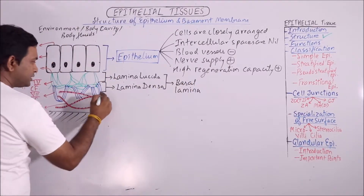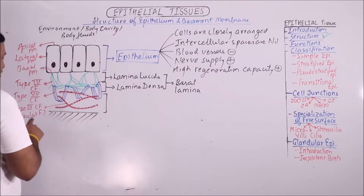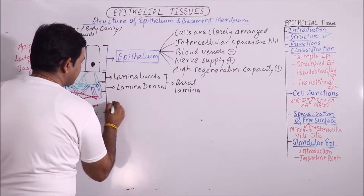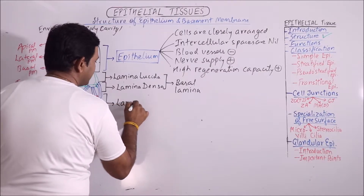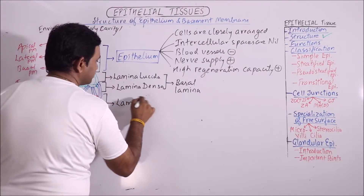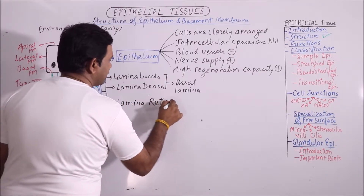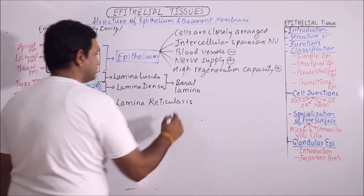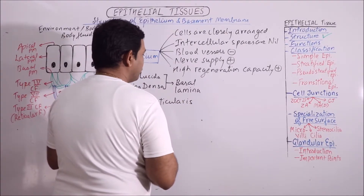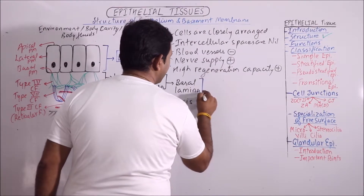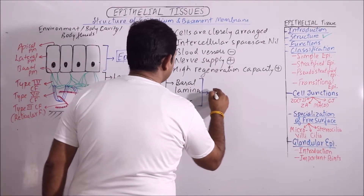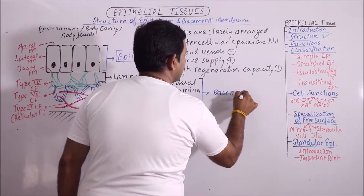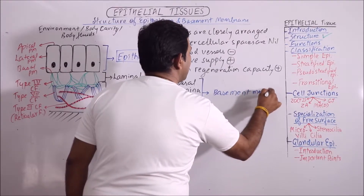Below the basal lamina, type 3 collagen fibers or reticular fibers are present. That is why this is known as the lamina reticularis. And finally, both the basal lamina and lamina reticularis together form the basement membrane.